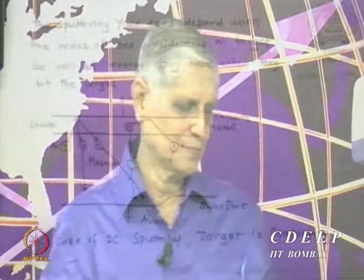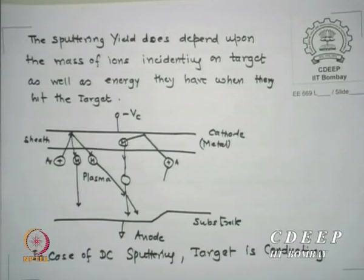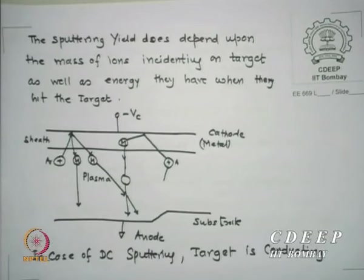Sputter yield is the number of ejected atoms of target per incident ion. The sputtering yield depends on the mass of ions. Argon is heavier, so if you use lighter ions, it is unlikely to do much damage and atoms may not be ejected. Also important is what energy they strike with — both energy and momentum decide how much kinetic energy is transferred to stationary atoms.